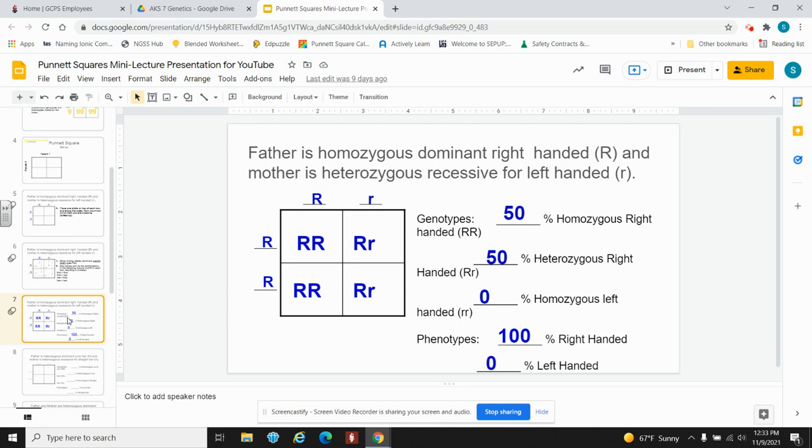So remember, the only time you will see a recessive trait is if both alleles are recessive, lowercase, lowercase. In this case, when we look at the prediction for the phenotype, four of four boxes are going to be right-handed. So 100%.